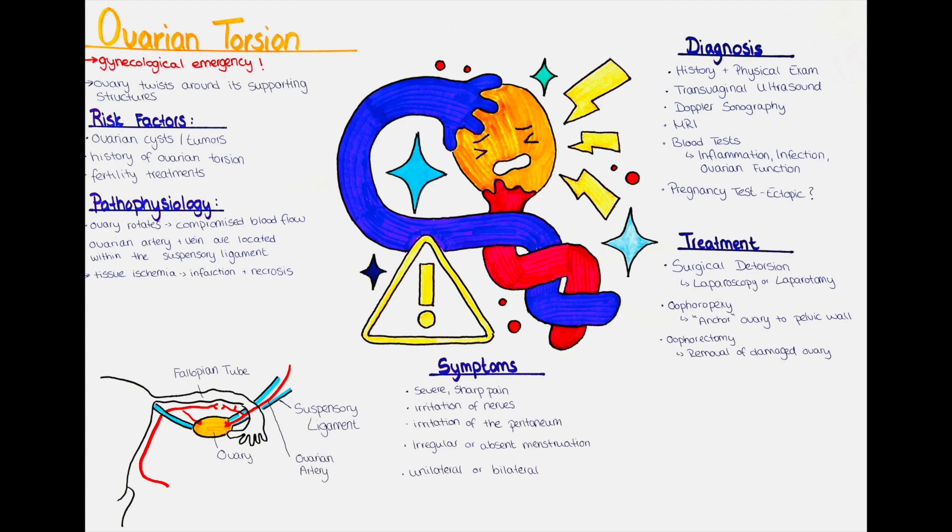In some cases, an MRI may be ordered if the diagnosis is uncertain or if additional information is needed. An MRI can provide detailed images of the ovaries and surrounding structures.